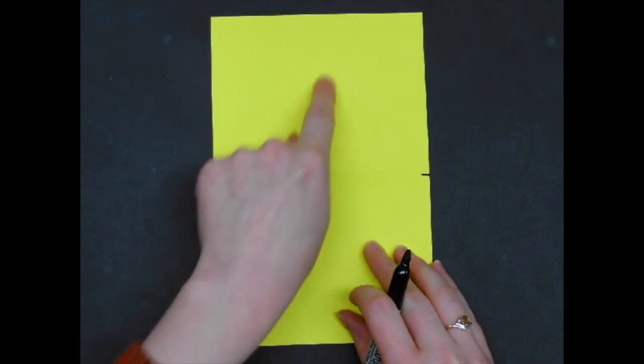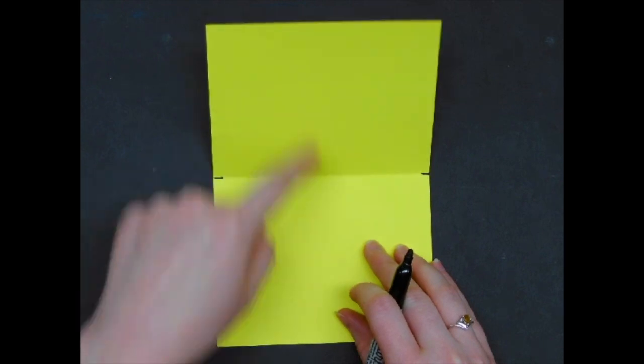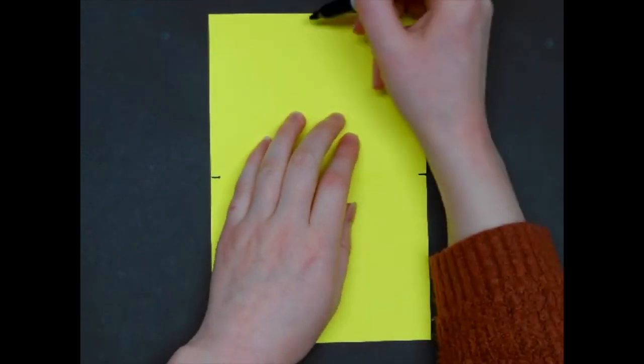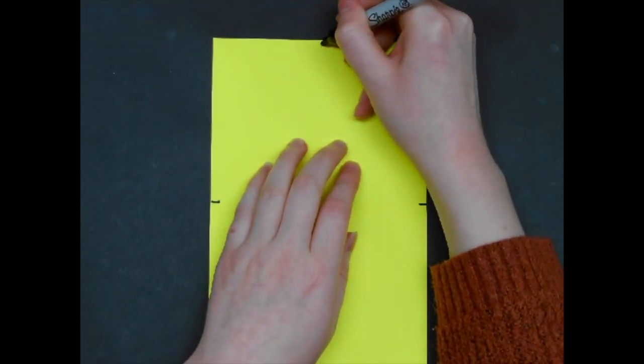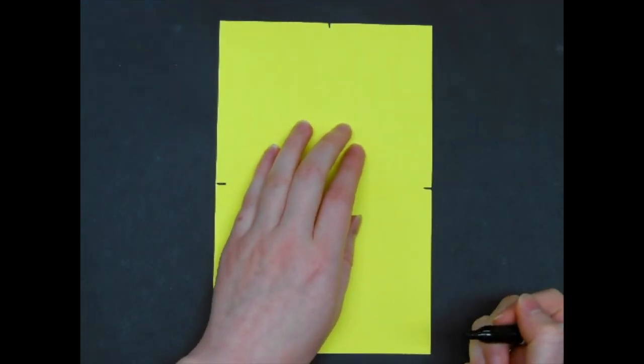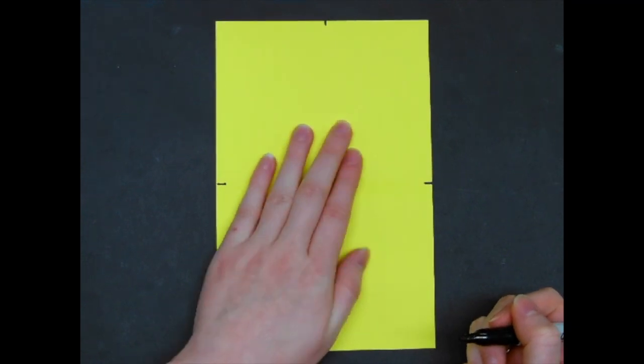On the top rectangle, you have two rectangles on the top one, close to the middle, top edge of the page, you're going to make a little dash. It does not need to be perfectly in the middle, just do your best.